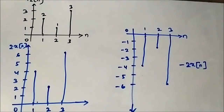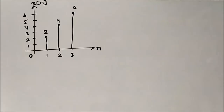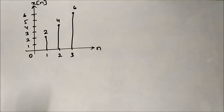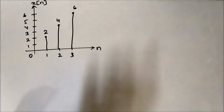This is -2x[n] — just the mirror image of the signal. So this is the amplitude scaling and inversion performed together on a discrete time signal — the first question. Now moving to the second question on amplitude scaling and inversion on a discrete time signal performed together.